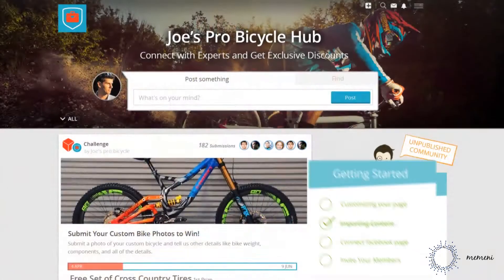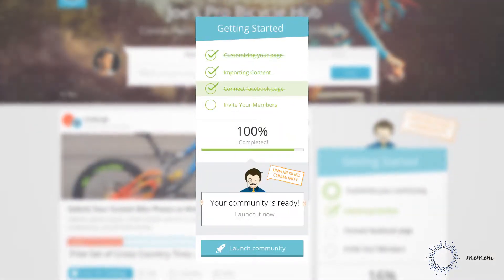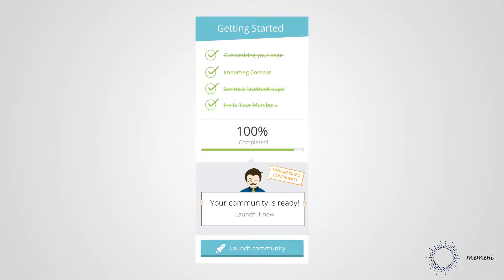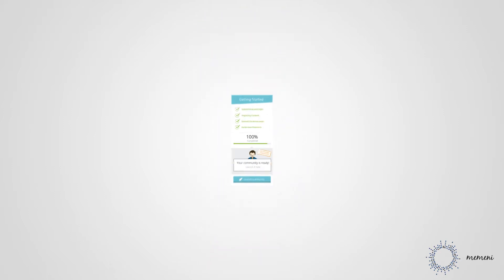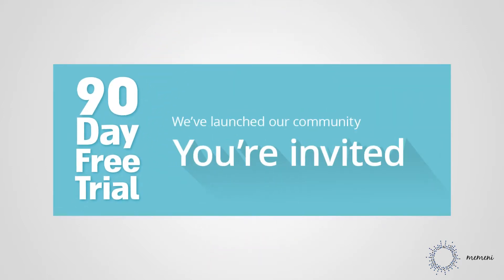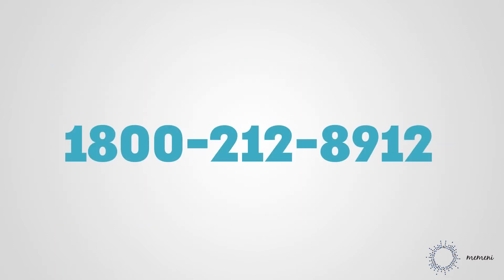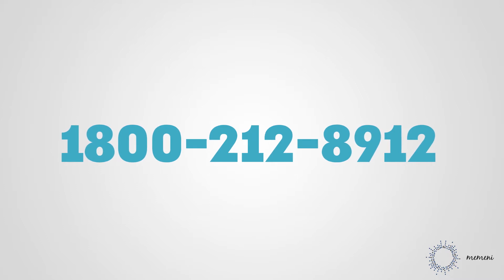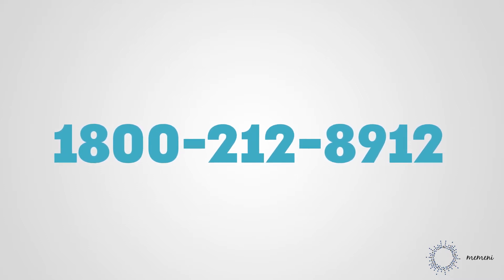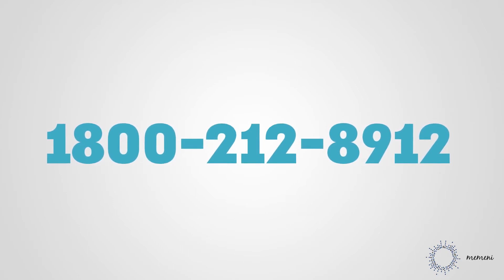To try it for free, simply customize your community, connect your social account, invite your members, and click on launch community. Our 90-day free trial is available for a limited time only, so don't wait. Launch today or call our toll-free number 1-800-212-8912 and one of our customer service representatives will help put the final touches on your new custom social network.